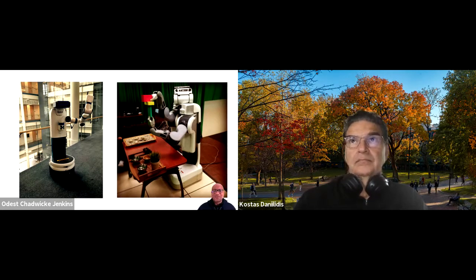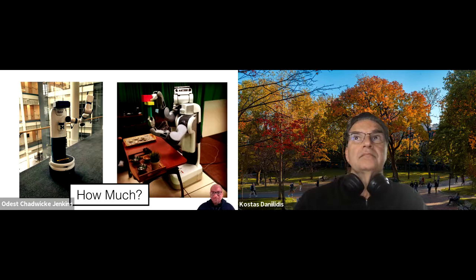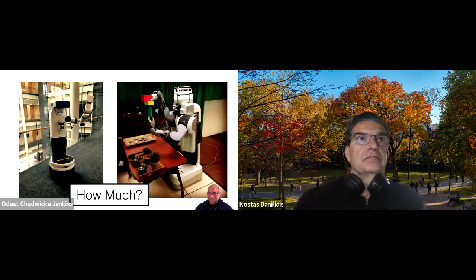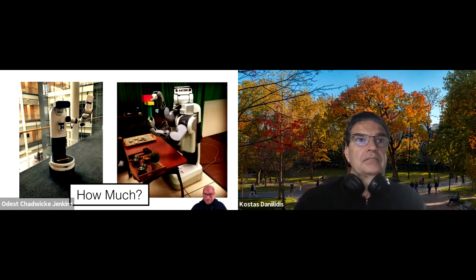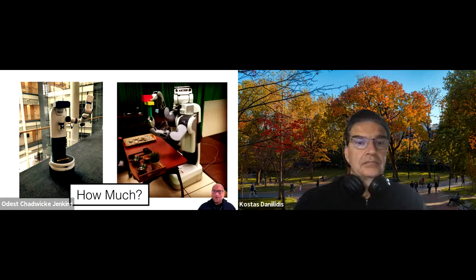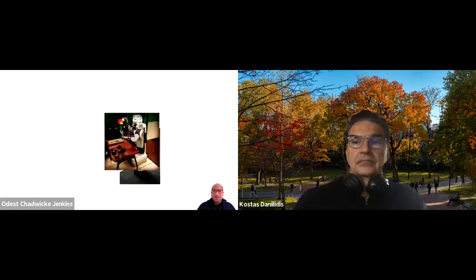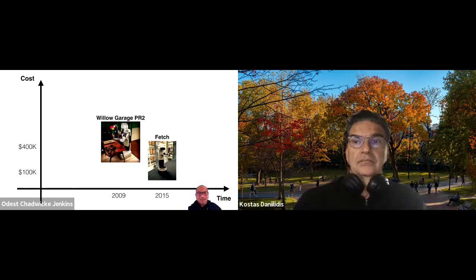Just a quick question — how much do you think these robots cost? I'm going to take another sip of coffee while you consider this. If we lay this out on two axes — time on the horizontal axis and cost on the vertical — the PR2 came out in 2009 and costs about $400,000, which is more than most people's houses.